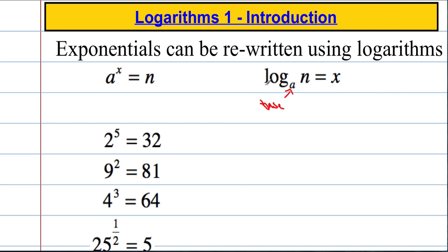What I like to say is what power of a gives me an answer of n. So we can rewrite these logs as follows. This will be log to the base 2 gives me an answer of 32. So what power of 2 gives me an answer of 32? It must be 5.